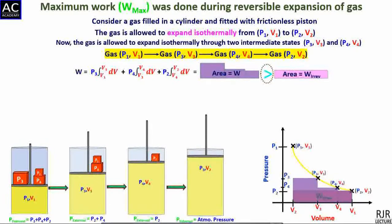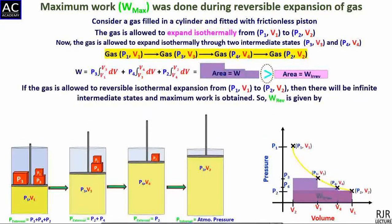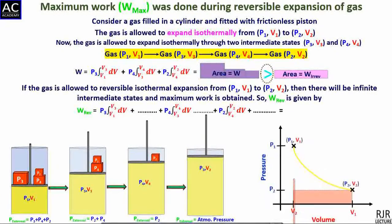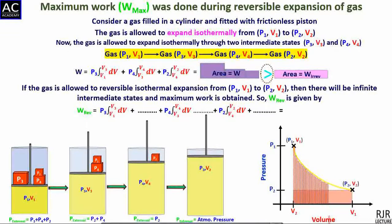If the gas is allowed to expand reversibly and isothermally from P1,V1 to P2,V2, there will be infinite intermediate states and maximum work is obtained. The work done by the reversible process is the sum of work done in each small intermediate state, shown in the graph as the sum of small areas under the curve. Therefore, the work done by the system in a reversible process is always maximum.